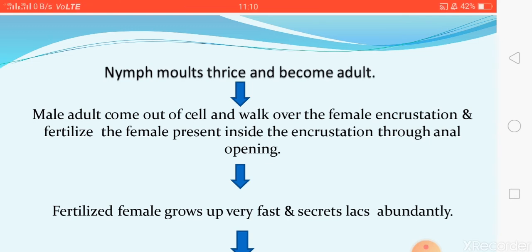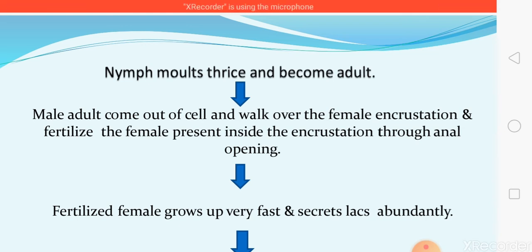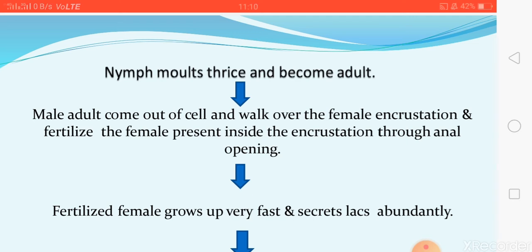For the female, the growth is along the vertical axis and forms a spherical shape. So in early stages you cannot distinguish between male and female incrustation, but in later stages the male cell becomes sleeper-shaped and the female cell becomes spherical.